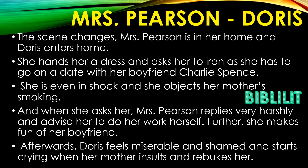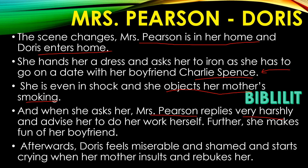The scene changes. Mrs. Pearson is in her home and Doris enters. She hands her a dress and asks her to iron it, as she has to go on a date with her boyfriend Charlie Spence. Doris is shocked to see her mother smoking and objects to it. Mrs. Pearson replies very harshly and advises her to do her own work herself. She also makes fun of her boyfriend Charlie Spence. Doris feels miserable and shamed and starts to cry when her mother insults and rebukes her.